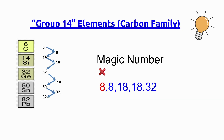Now let's practice writing the group 14 elements' atomic numbers with the help of magic numbers. The atomic number for carbon is 6. 6 plus 8 gives 14, which is the atomic number for silicon. 14 plus 18 gives 32, the atomic number for germanium. 32 plus 18 gives 50, the atomic number for tin. 50 plus 32 gives 82.